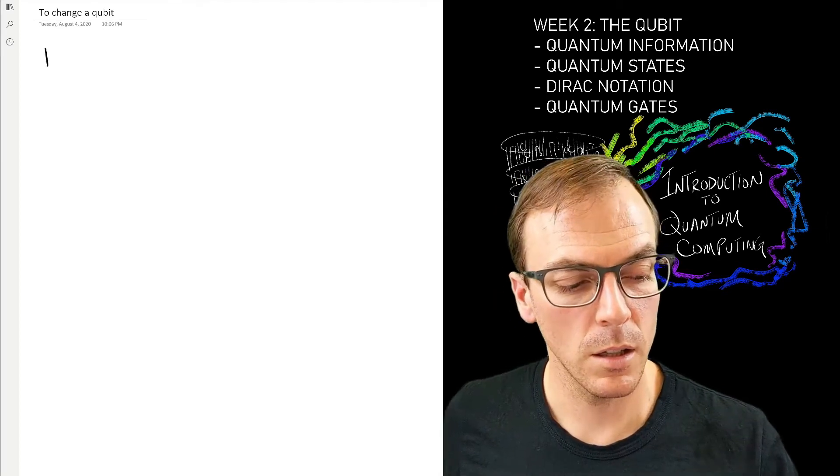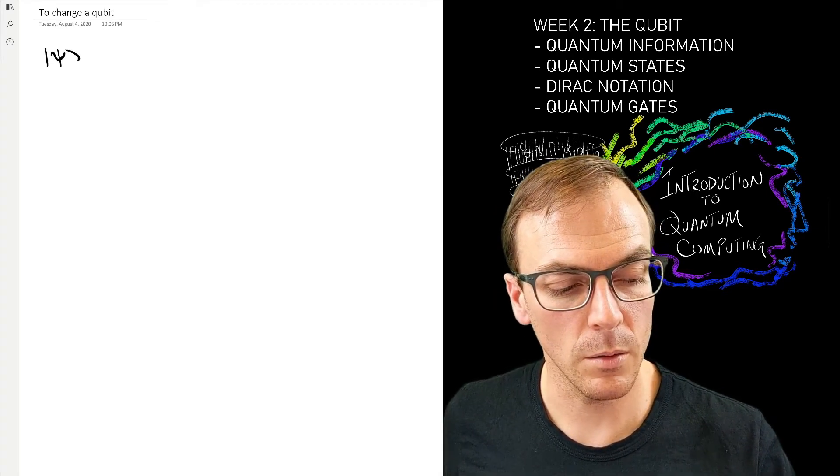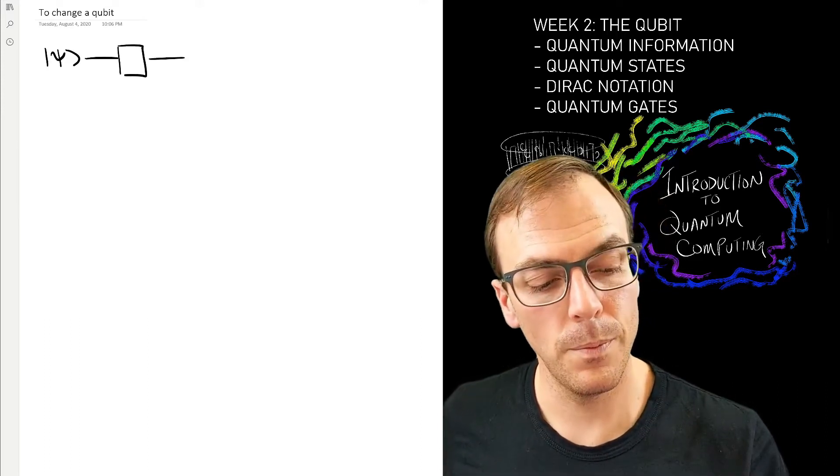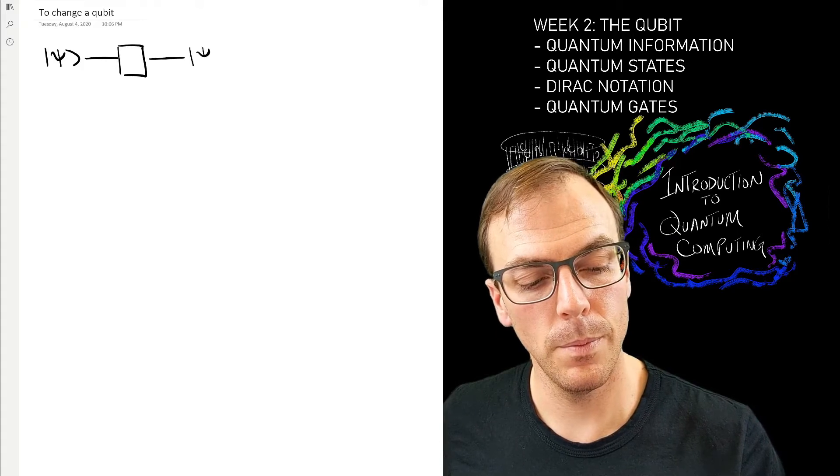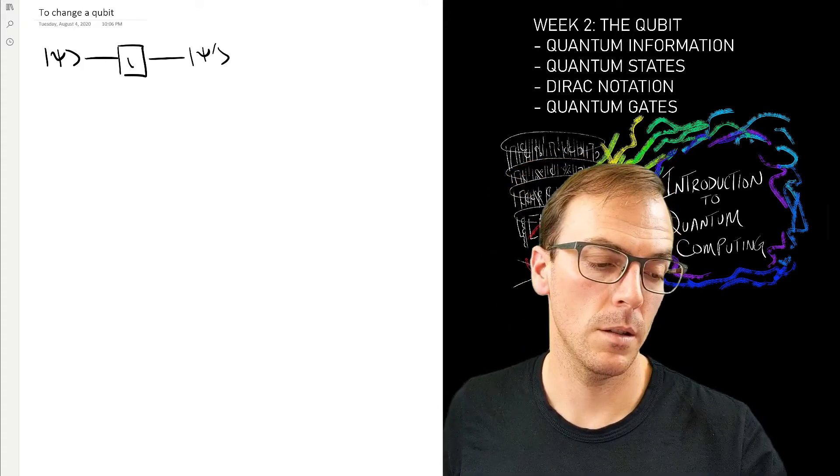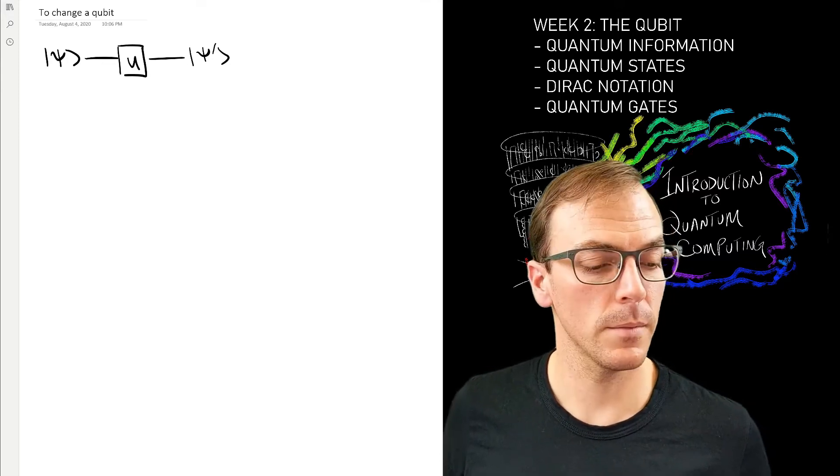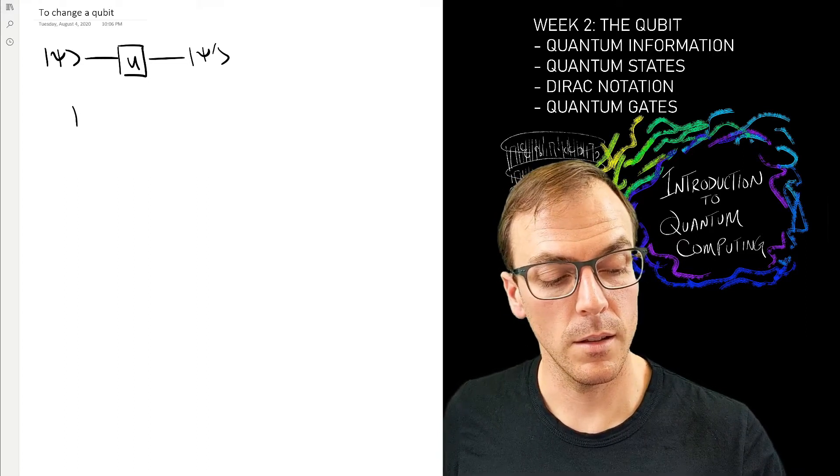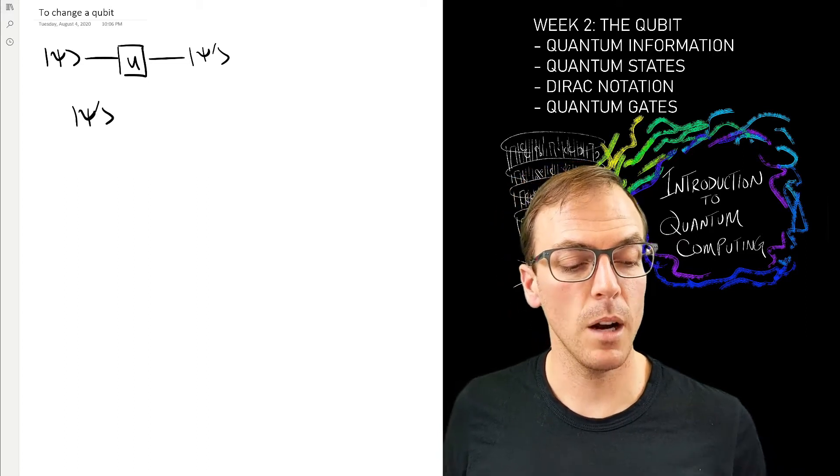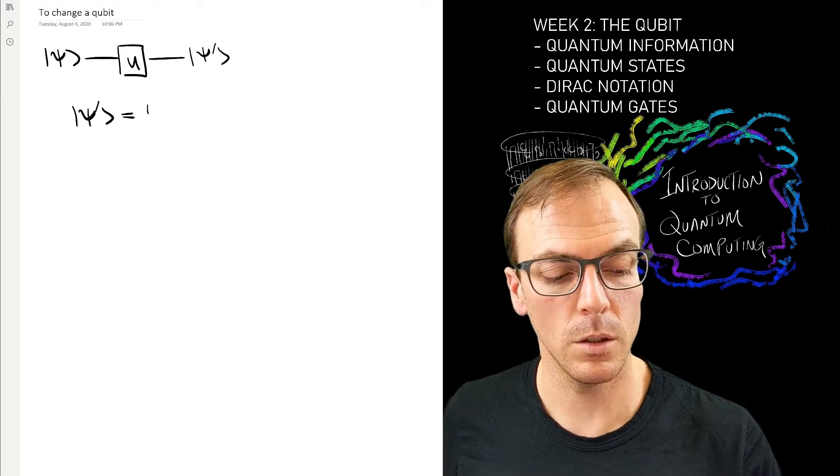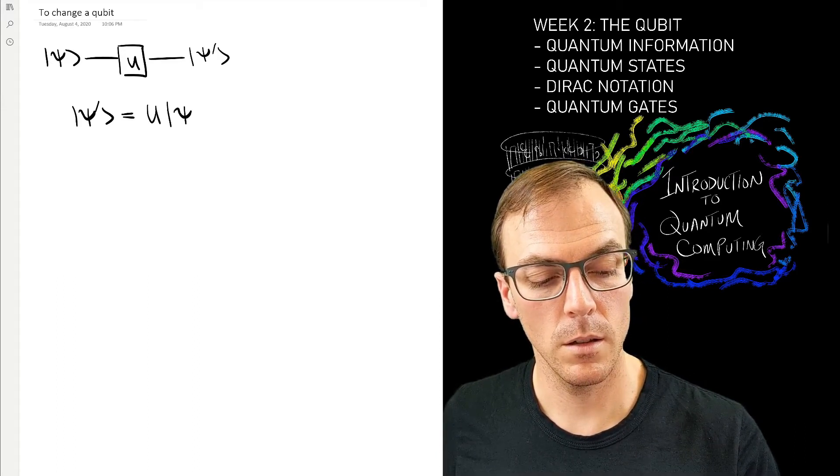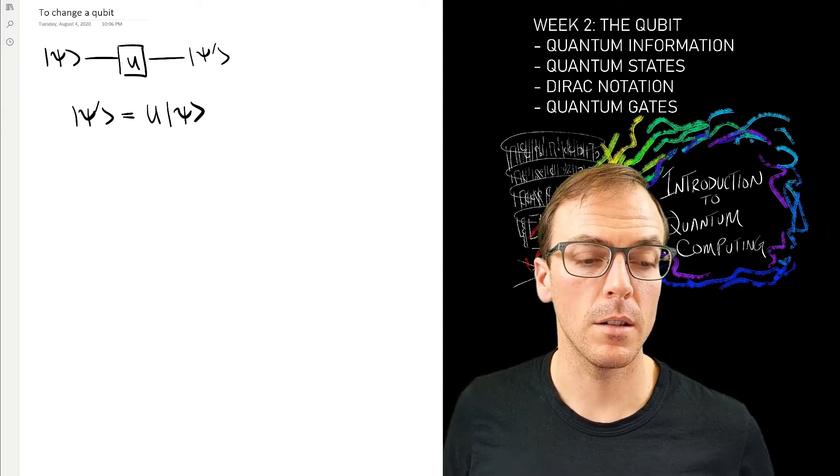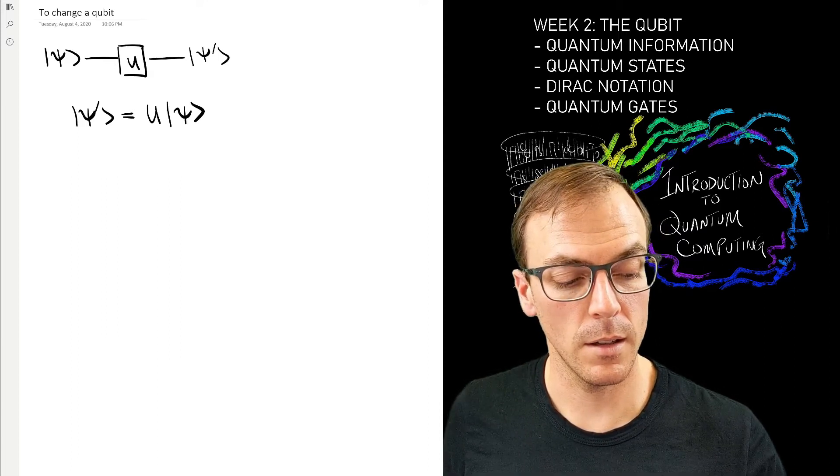We've seen a picture like this before, and what that picture means is that this state ψ′ is equal to this object U acting on ψ.